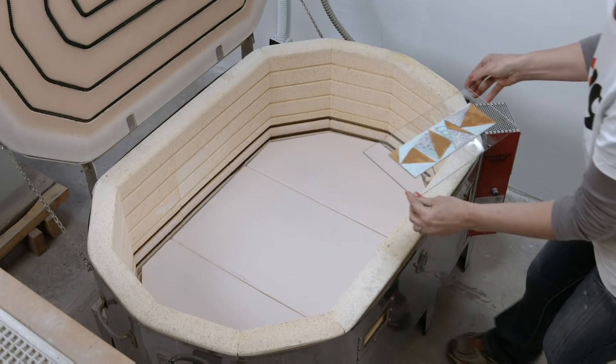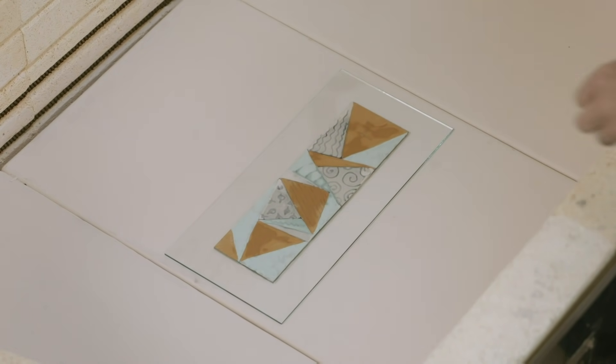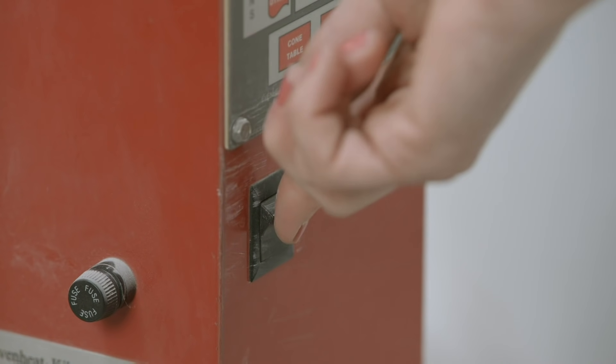The two pieces are then placed into an electrically fired kiln. Here, the glass will be gradually heated to 782 degrees Celsius and then cooled over a period of 10 hours.